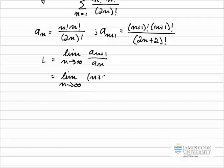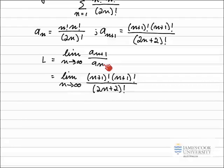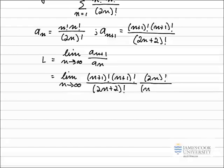So that equals the limit as n approaches infinity — we haven't evaluated the limit yet, so we state the limit. aₙ₊₁ is n plus 1 factorial times n plus 1 factorial, all divided by 2n plus 2 factorial, divided by aₙ. We multiply by the reciprocal of that fraction, so the 2n factorial comes up to the top and n factorial times n factorial goes on the bottom.